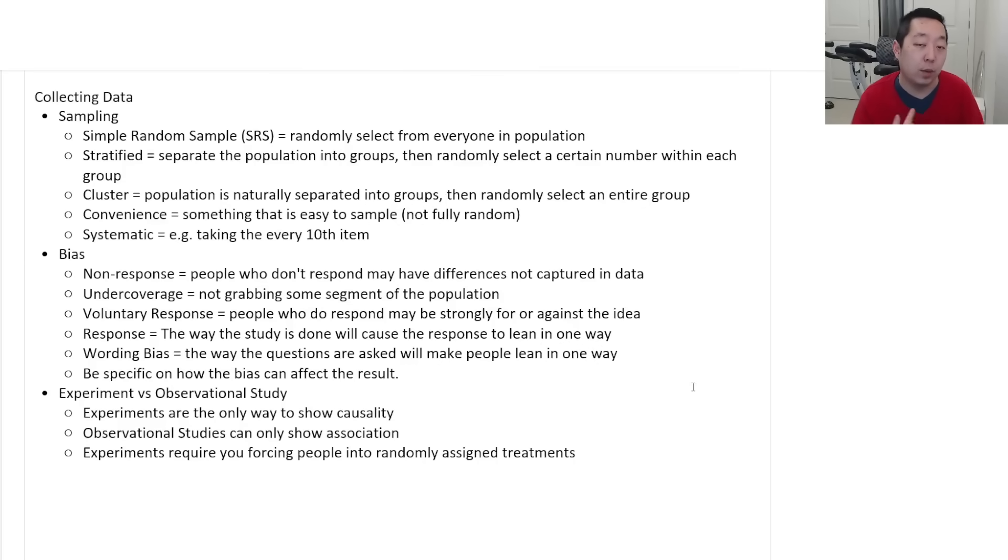Wording bias is the way the questions are asked may affect the way people lean one way or the other. Now, when you're asked about bias about one of these things, be specific about how the bias affects it. You want to say something like, in my example with the police officer, I might say the police officer is intimidating and a person might be more inclined to lie and say they haven't broken the law when in fact they have. So they're more likely to say no because of that. So you want to be specific on how the bias actually affects the answer to the situation there.